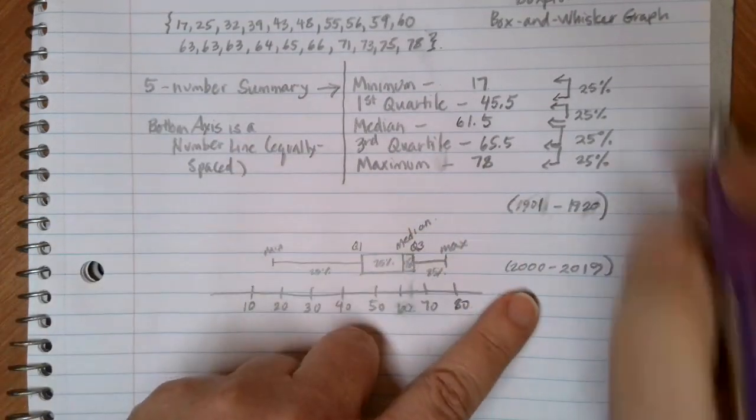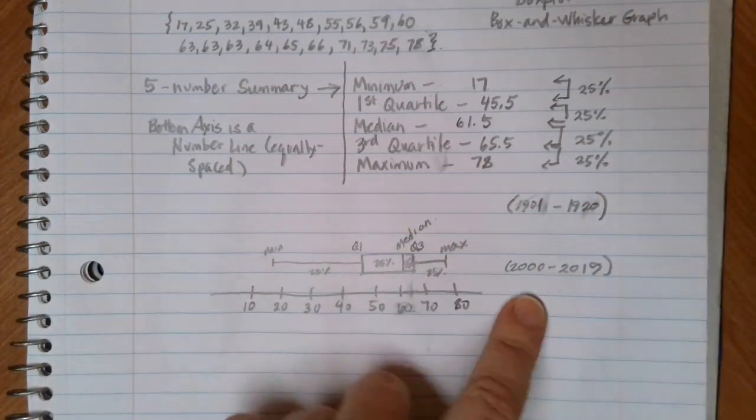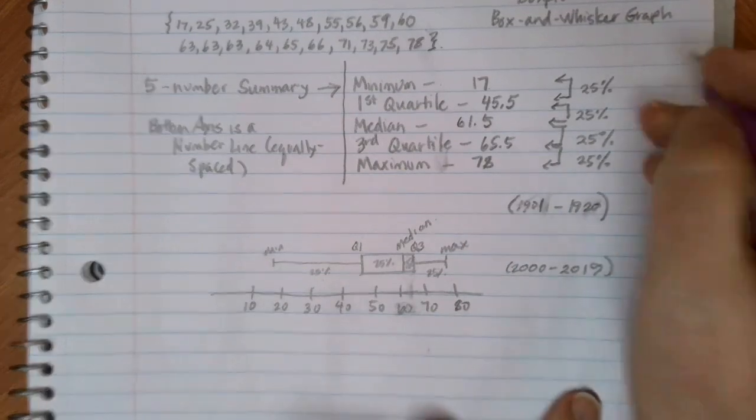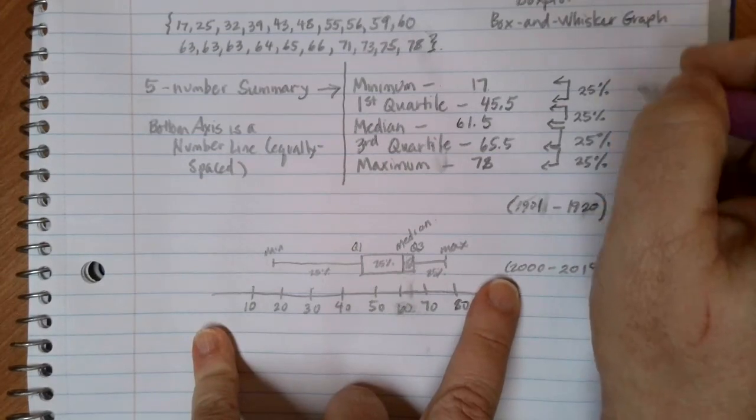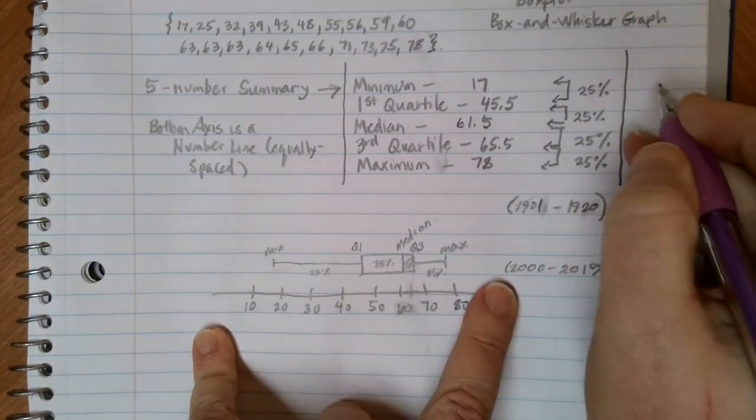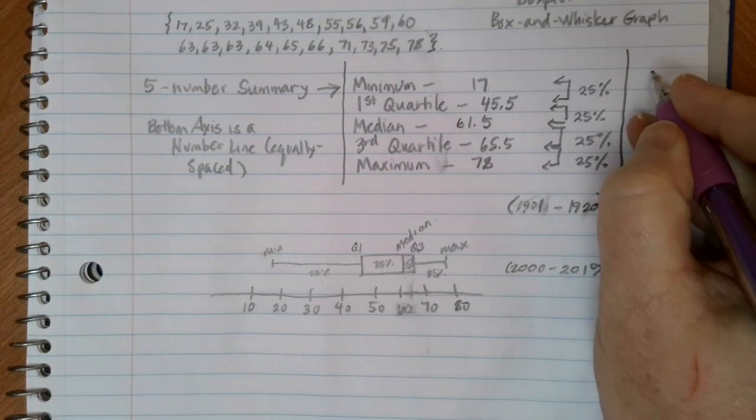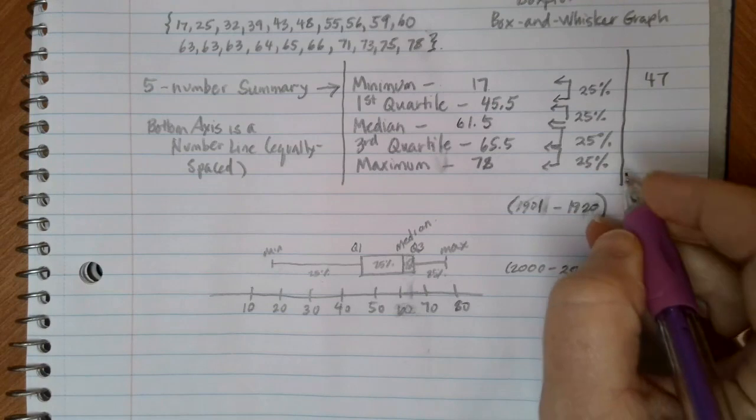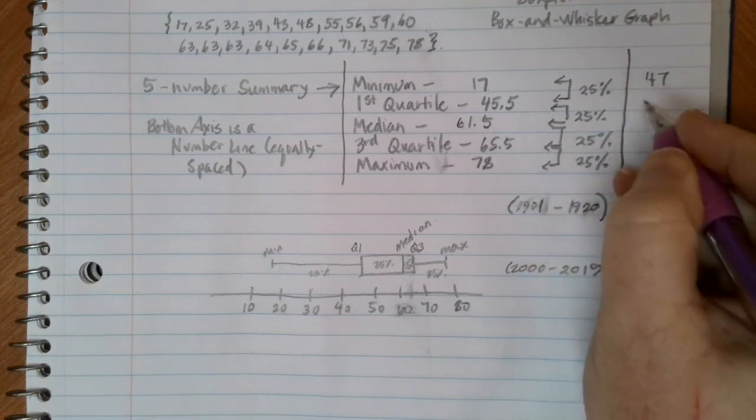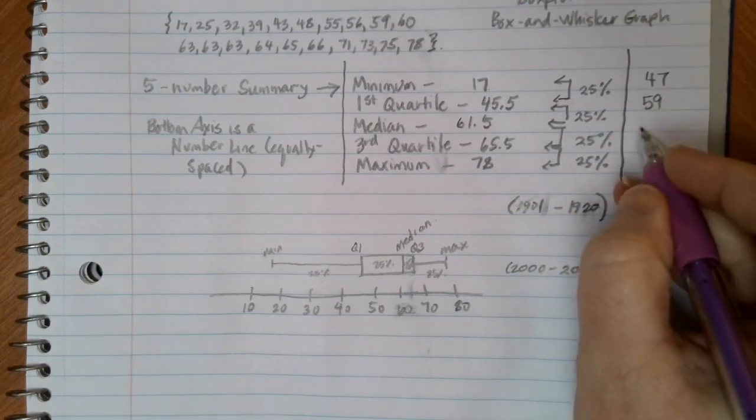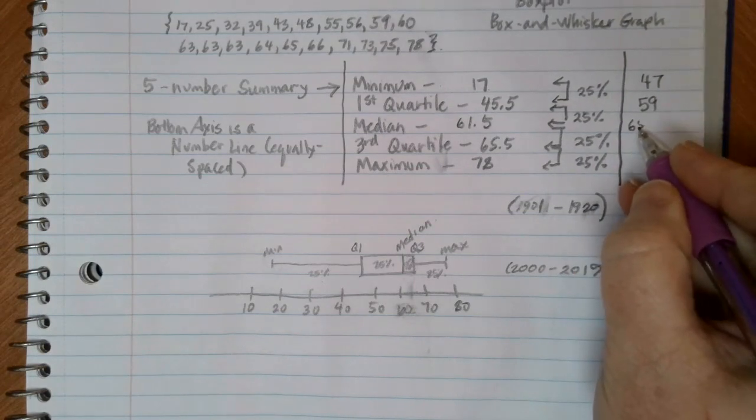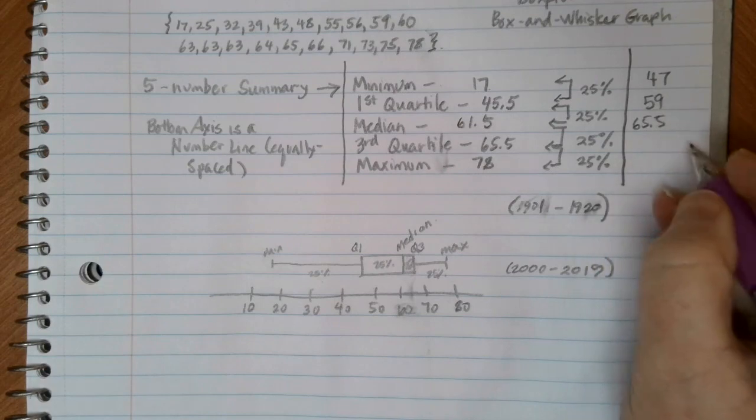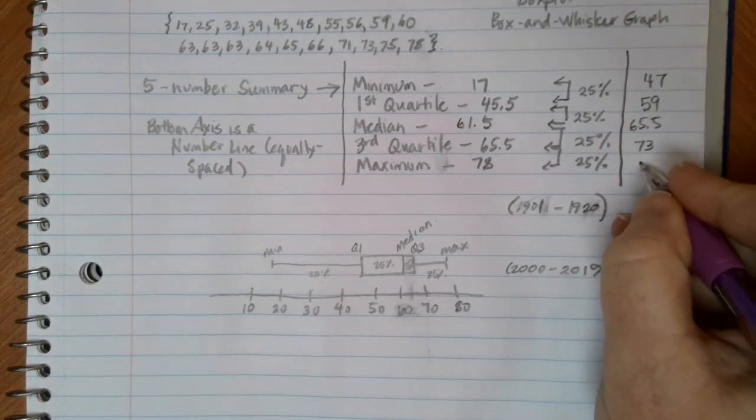So we've still got 20 years represented here. And we've got these different data values. Now, I went through and calculated these, and let me give you what the five-number summary is. Over the years from 1901 to 1920, I had a minimum value of 47 was my youngest Nobel Prize winner in that age. 59 was Q1. 65.5 was our median value that time. And 73 was Q3. And our maximum was 80.